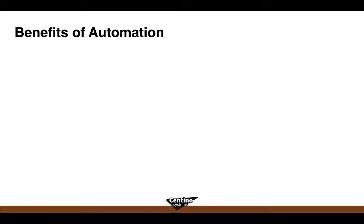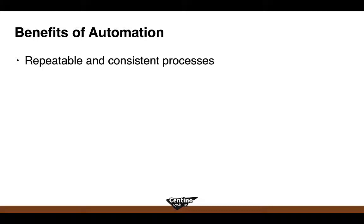The number one benefit of automation is repeatable, consistent processes for rolling out SQL Server in a defined best-practice way for organizational standards — and being able to do that over and over again. Since we have code describing how SQL Server is configured, we can roll out instances much faster — whether it's one, ten, or a hundred — because the code defines exactly what we want.